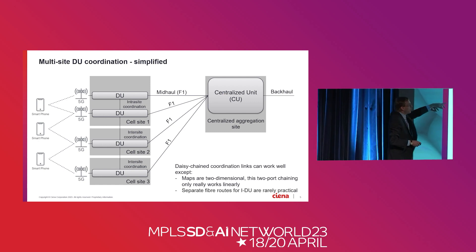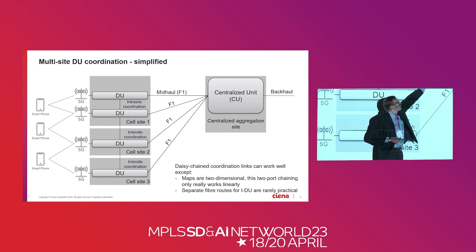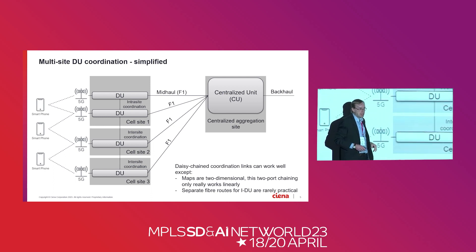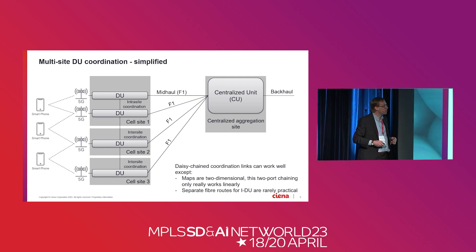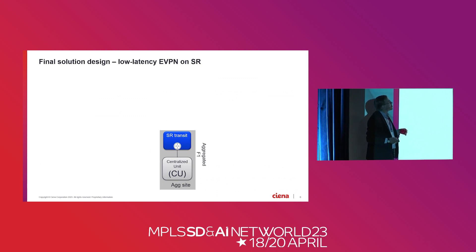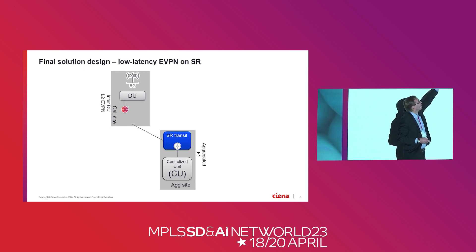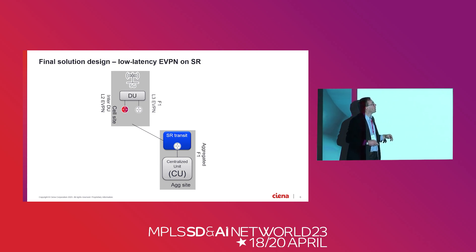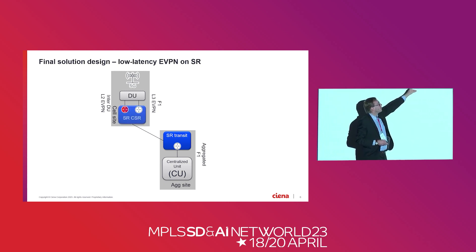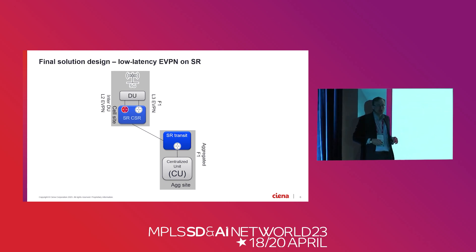Secondly, having fiber routes between DUs directly is not very easy. Some people are fiber-rich, so they can have a parallel fiber path, but even that adds complexity you possibly do not want. So the solution for MPLS is fairly obvious: we will use EVPN on SR. We will add on, at the cell site, an inter-DU L2 EVPN and an L3 EVPN for F1, going through the same cell site router. That aggregates down one fiber — saving fiber — and because it is going back to a central point, it will give you fast switching.